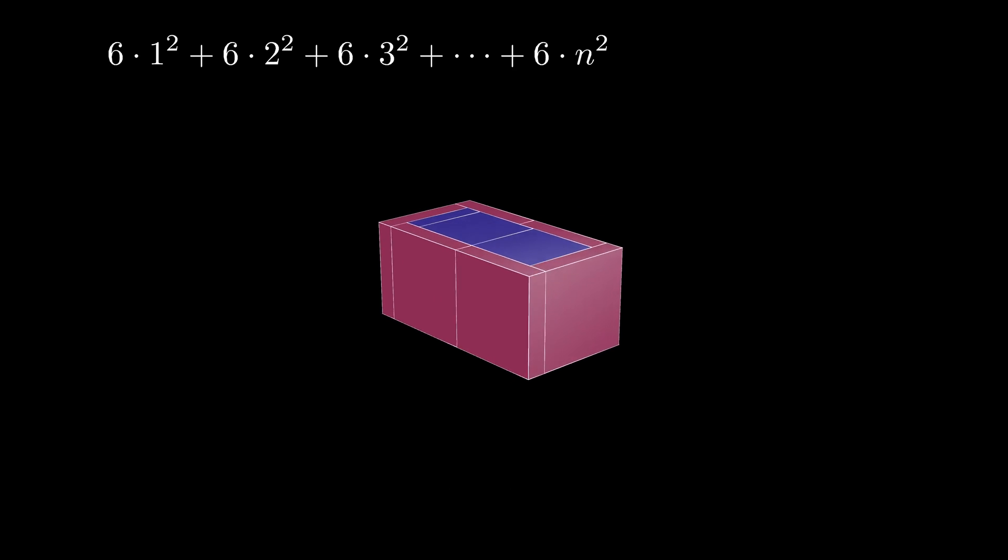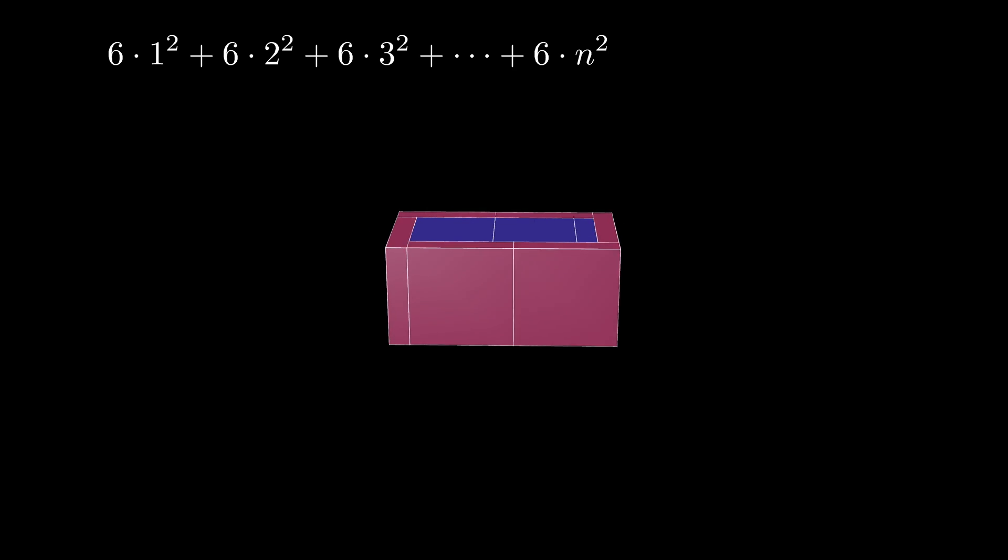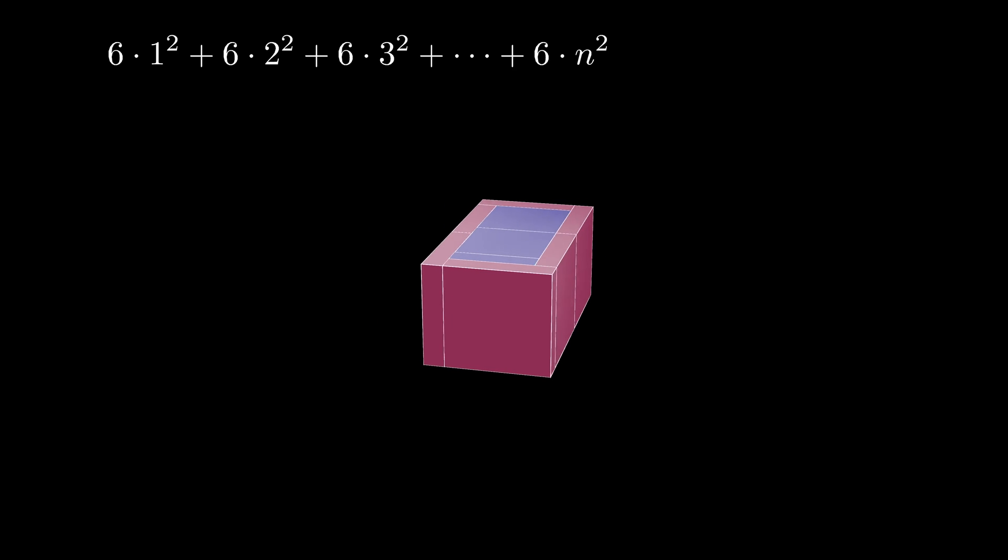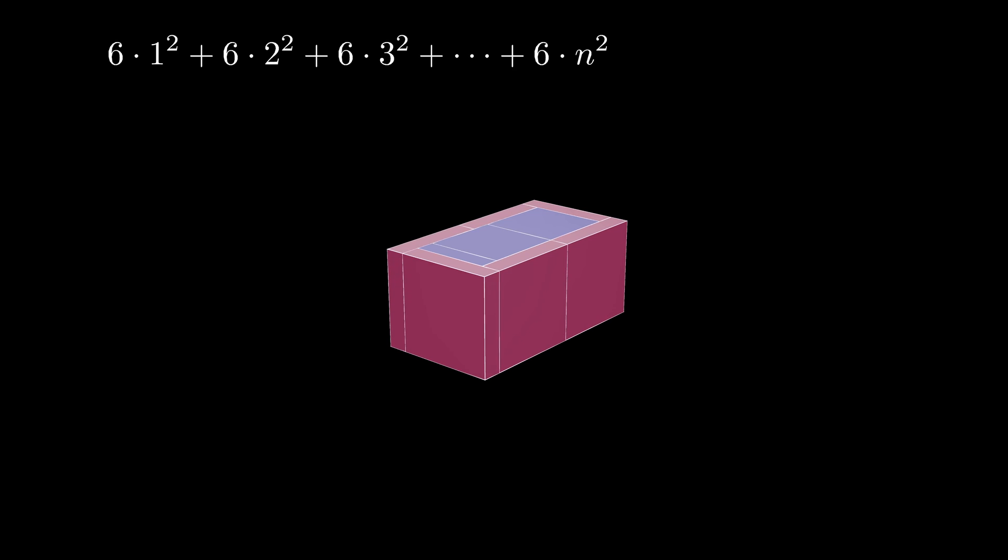This process of adding shells at each stage has built a filled in cuboid whose volume is given by this finite sum shown here: 6 times 1 squared plus 6 times 2 squared, added all the way up to 6 times n squared. On the other hand, this cuboid has dimensions n by n plus 1 by 2n plus 1.